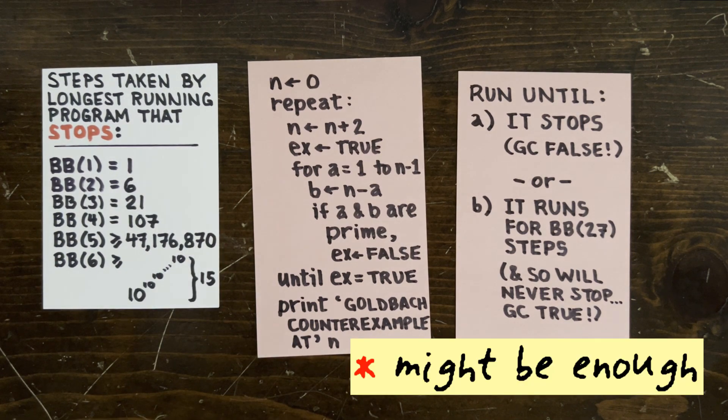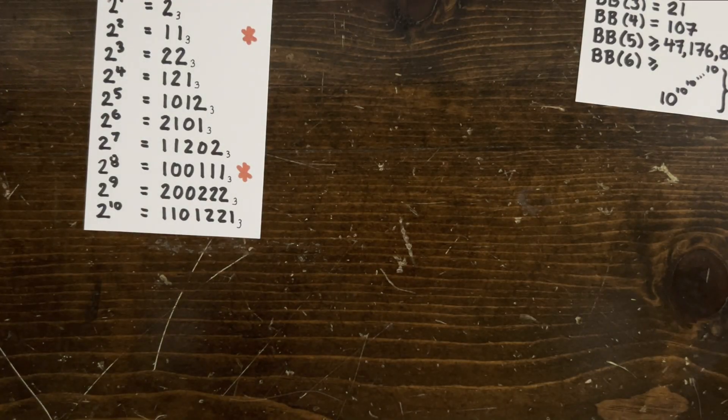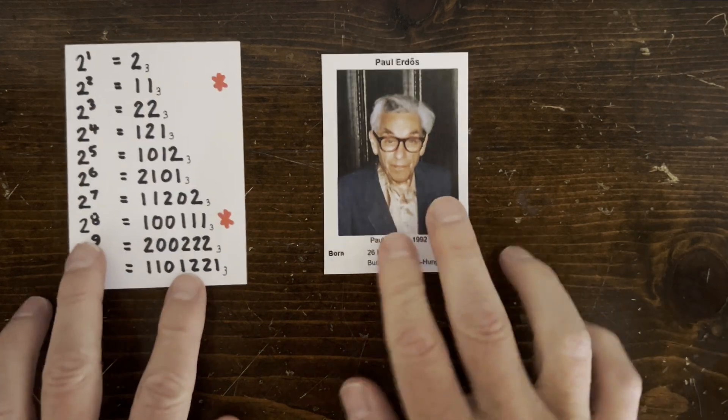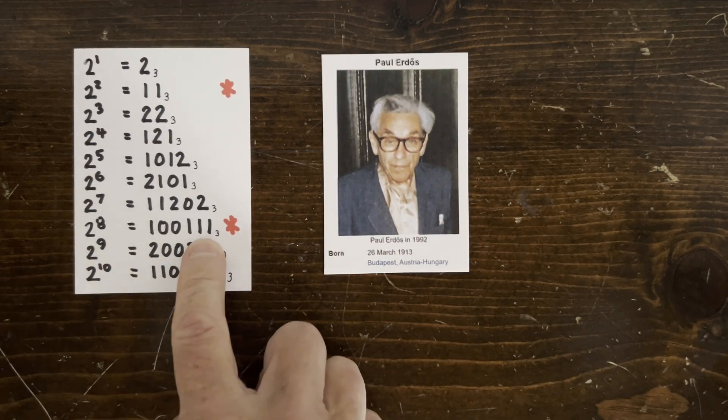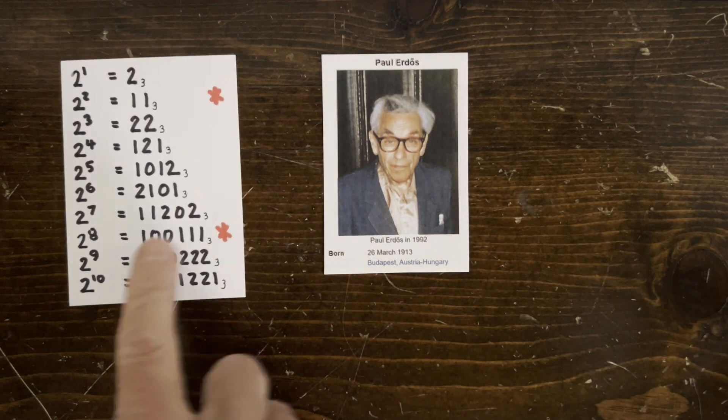Here's another conjecture. Paul Erdős noticed that if you write the powers of two in base three, something weird happens at two to the eighth. The digit two fails to appear in the base three representation. He famously conjectured that this weird thing never happens again.